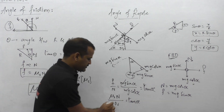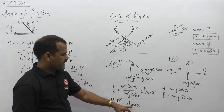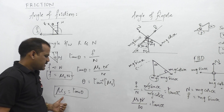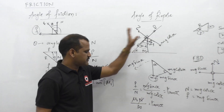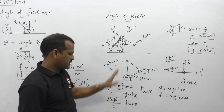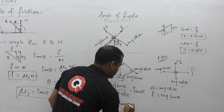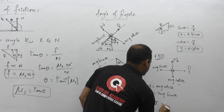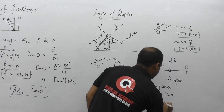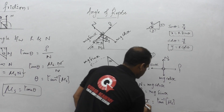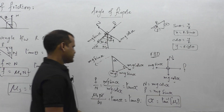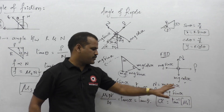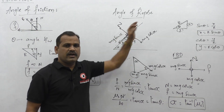N cancels and the coefficient of static friction mu_S is defined as the tangent of the angle of repose. We already know that mu_S is also the tangent of the angle of friction, and both are the same. So mu_S equals tan alpha, or the angle of repose alpha equals tan inverse of mu_S. This is the relation between the angle of friction and the angle of repose.